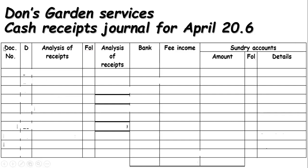This is the cash receipt journal. On this blank spreadsheet we have the source document, where we could be putting the document number; D standing for date; analysis of receipt — this is the details of where the money is coming from; then bank — the money that has been banked; income fee — this reflects the core business of the company, meaning any services that involve garden services; and then sundry accounts, which reflects any other sources of income other than the core business.